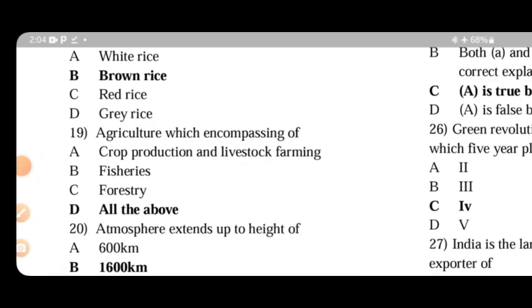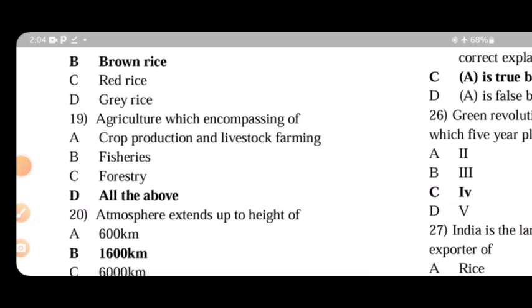Agriculture encompasses crop production, livestock farming, fisheries, and forestry - all of the above.